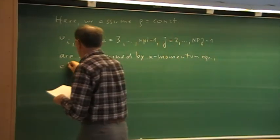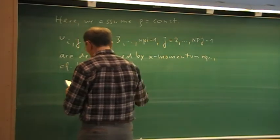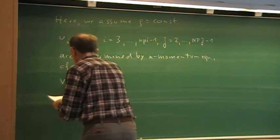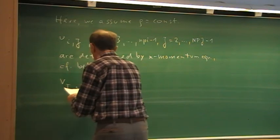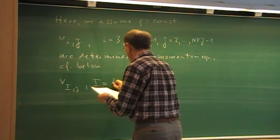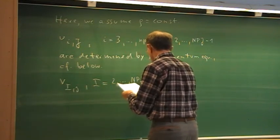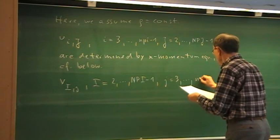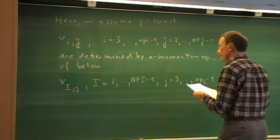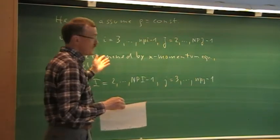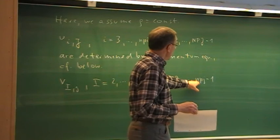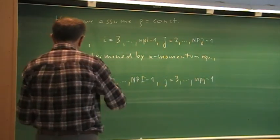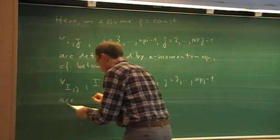That is what we shall see later on. And for the velocity component in the y-direction, that is V, the notation is capital I, lowercase j, for capital I from 2 to nPi minus 1, and for lowercase j from 3 to nPj minus 1. I am using upper and lowercase, but it is like in Matlab — regarding nPi or nPj, they are the same.